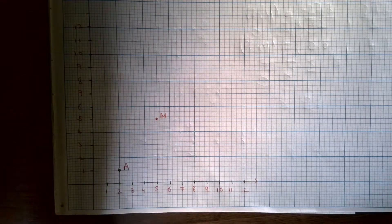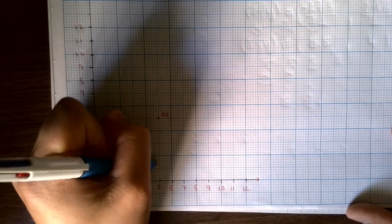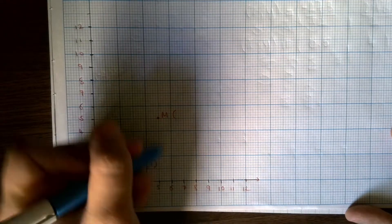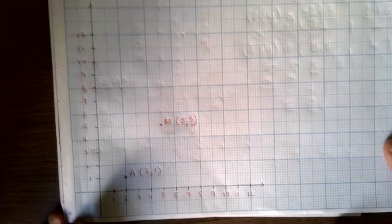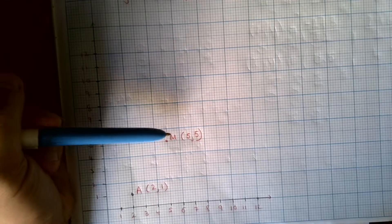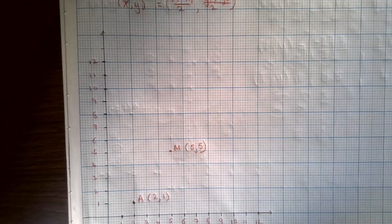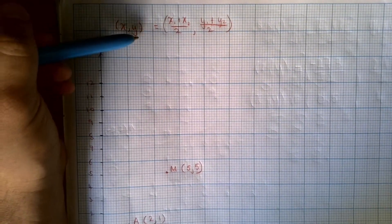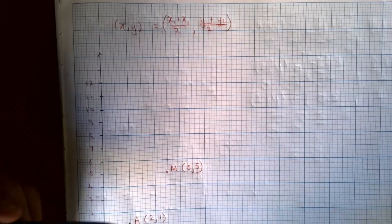So, the coordinates of A are 2, 1 and the coordinates of M are 5, 5. I'm just going to label them there. Now, essentially what's happened is we've been given the answer, which is M, and we're going to need to work backwards. So what I can do is form an equation from our formula that will allow us to substitute in these values and solve.